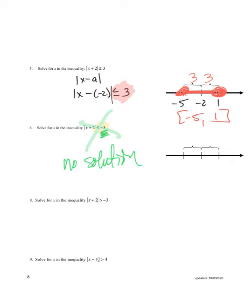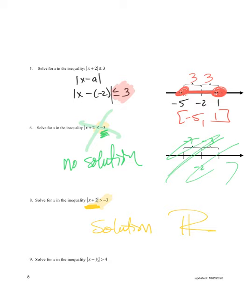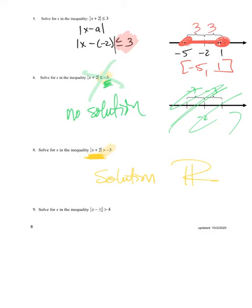Now look at the next one. I'm trying to find values of X such that the absolute value expression is greater than negative three. We know absolute value is always going to be a positive value, and a positive value is always greater than a negative value. So the solution set is all real numbers — no matter what value of X you substitute in, it will always be true.